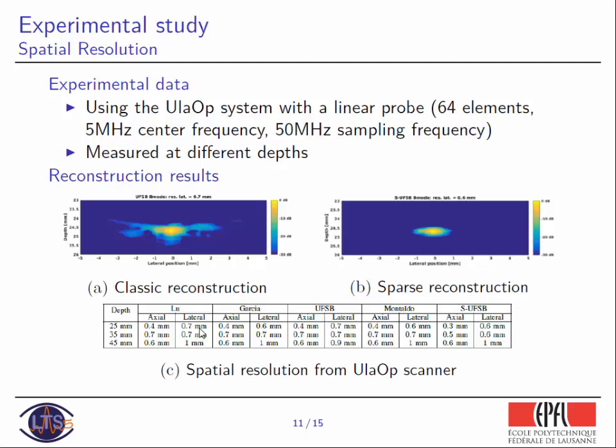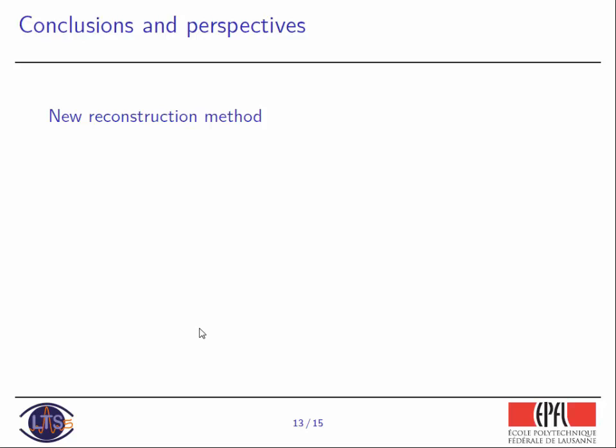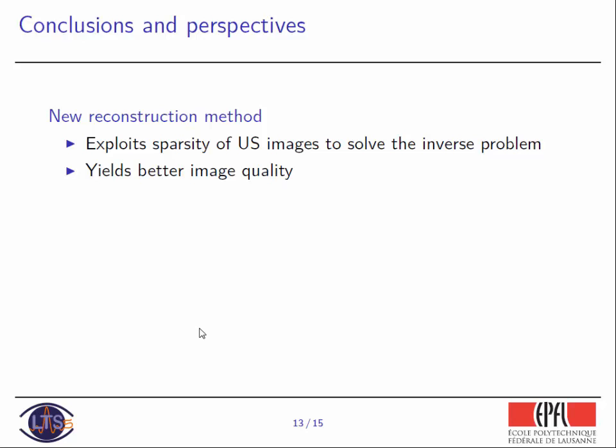In conclusion, what we propose is a new reconstruction method that exploits sparsity of ultrasound imaging to solve a problem that was ill-posed from the beginning, instead of using an approximation of the inverse operator. This yields better image quality, especially in terms of contrast. We also tested on in vivo data, where it especially enhanced contrast. The problem we are working on is that it leads to high computational load, because it involves convex optimization algorithms that are computationally costly, requiring around 20 iterations to converge to the optimal solution.